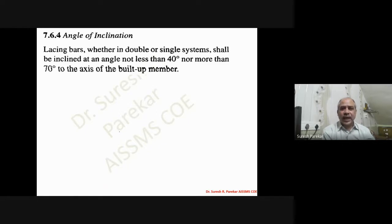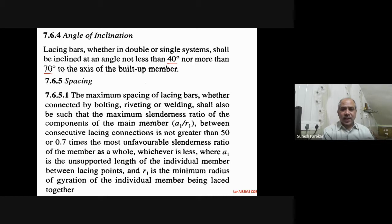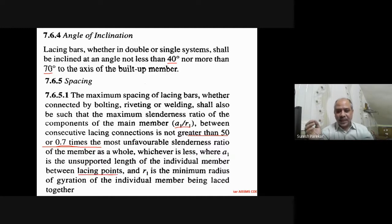The angle of inclination for lacing varies between 40 degrees and 70 degrees, and is generally taken as 45 degrees. For spacing of lacing, we check two criteria: A1/r1 should not be greater than 50, or 0.7 times the most unfavorable slenderness ratio (taken as r_zz). Here, A1 is the unsupported length of the individual member between lacing points, and r1 is the minimum radius of gyration of the individual member being laced.